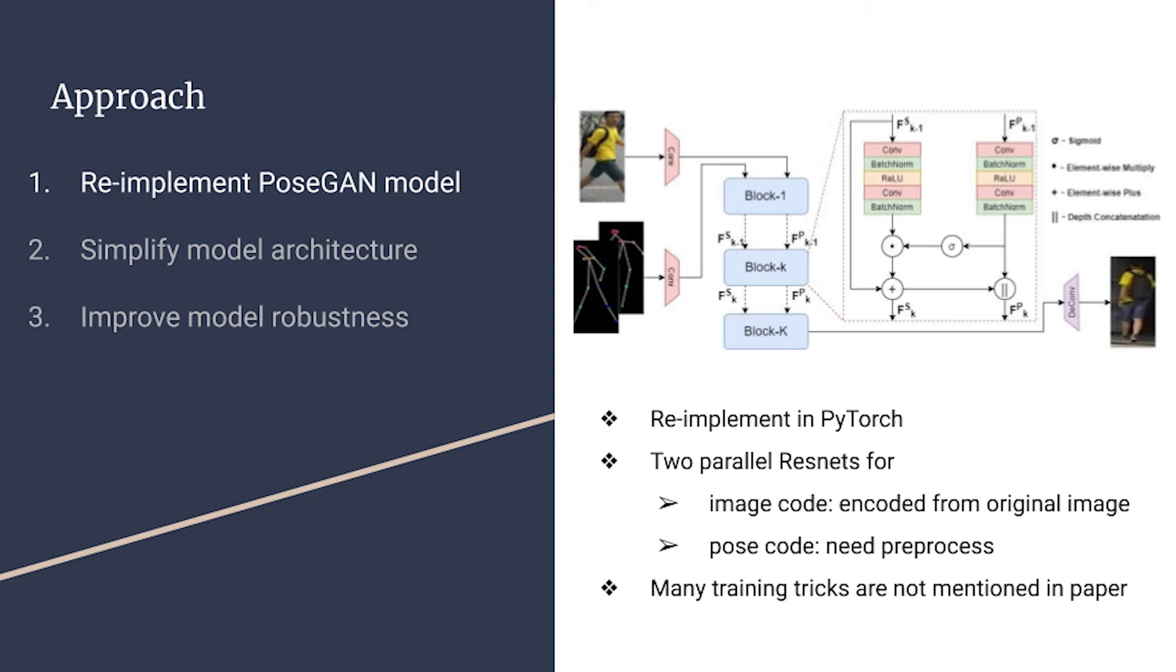The most important part in this model is the pose-attentional transfer block, aka PAT block. It is composed of two parallel ResNets. The first one deals with the image code, which is encoded from original images. The second one deals with pose code, which is the pose keypoints from our preprocessing.